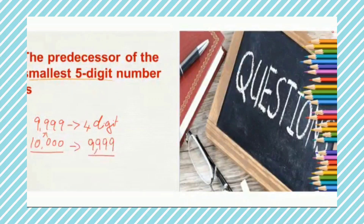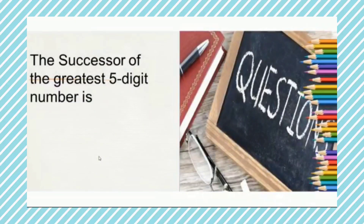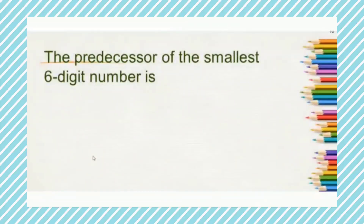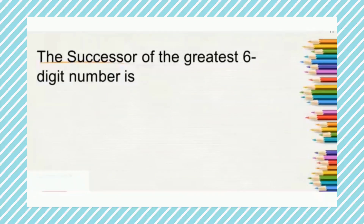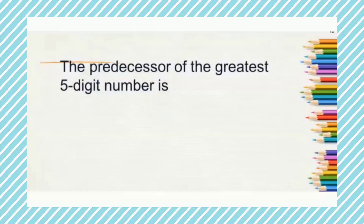The same way, you will have to find answers for the next questions. Find the successor of the greatest 5-digit number. Find the predecessor of the smallest 6-digit number. Find the successor of the greatest 6-digit number. And find the predecessor of the greatest 5-digit number. Find each of those numbers and then find their successor or predecessor accordingly.